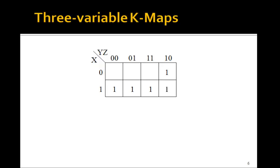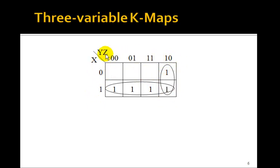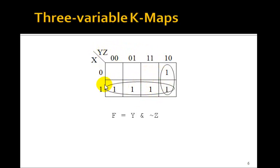Let's try another example. How many circles here? There are two, but remember I can circle powers of four, so I can circle all four of these together. What goes away? The x goes away, leaving y and not z. And if I circle all four, both y and z go away because I've circled the zeros and the ones of both y and z, leaving only x. So the result is y and not z, OR x.